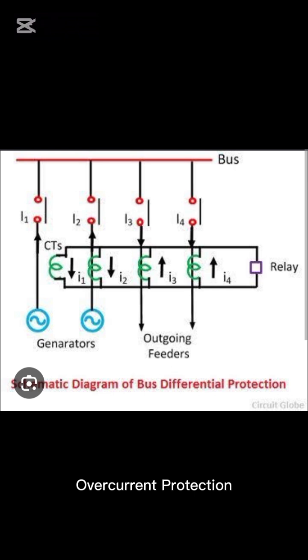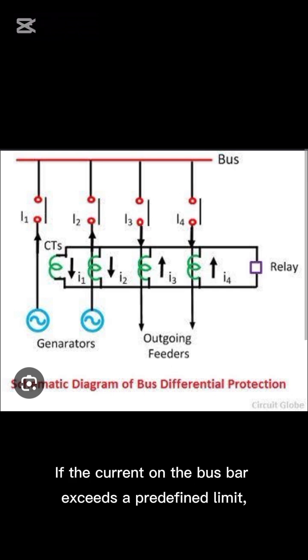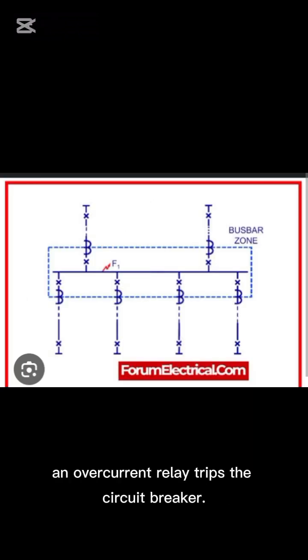Overcurrent protection. If the current on the bus bar exceeds a predefined limit, an overcurrent relay trips the circuit breaker.